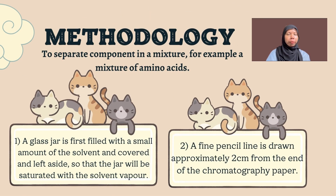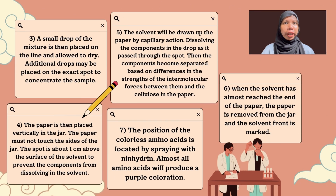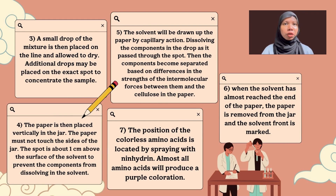The methodology of paper chromatography to separate components in a mixture — for example, using a mixture of amino acids — first, a glass jar is filled with a small amount of solvent and left to stand so the jar is saturated with solvent vapor. Next, a fine pencil line is drawn approximately two centimeters from the end of the chromatography paper. A drop of the mixture is placed on the line and allowed to dry; additional drops may be placed on the exact spot to concentrate the sample. The paper is then placed vertically in the jar without touching the sides, with the spot about one centimeter above the solvent surface.